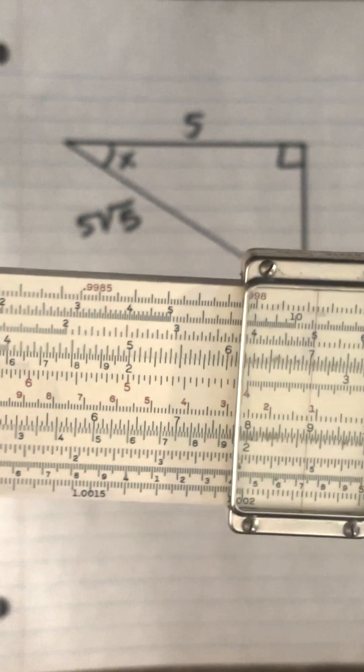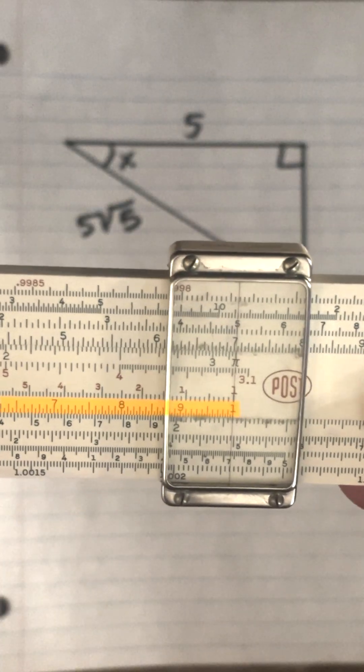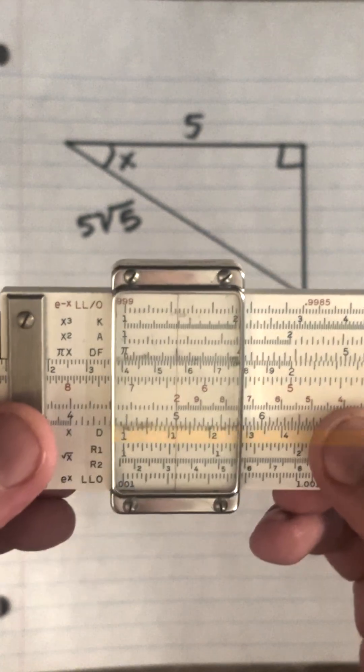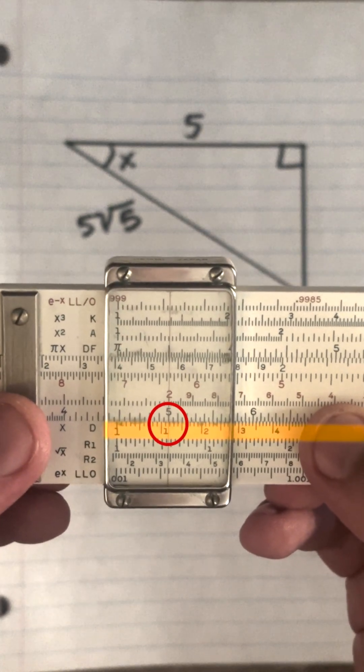So now I can times that by 5. So if I put the right index on the square root, and I move down to 5 on the c scale, I come up with 11.2.